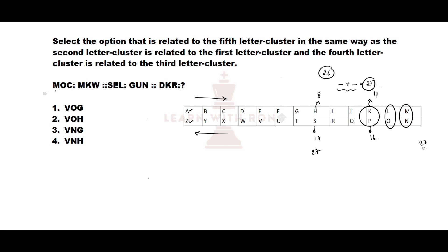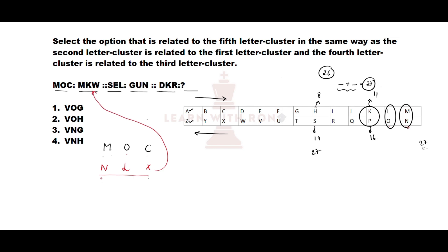The question states: MOC is related to MKW, SCL is related to GUN, and we need to find the letter cluster related to DKR. Taking the first cluster MOC: the opposite of M is N, the opposite of O is L, and the opposite of C is X. Then subtracting 1 from each: N minus 1 is M, L minus 1 is K, X minus 1 is W — giving MKW.